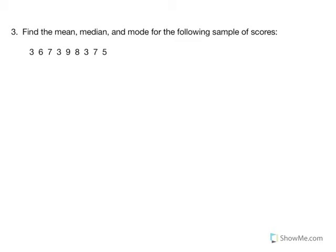Number three: we're given a small sample distribution and we're asked to calculate the mean, find the median, and report the mode. We begin by calculating the mean. Our equation for a sample is: the mean is equal to sigma x over n. Let's replace variables.